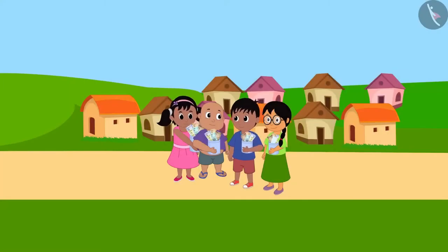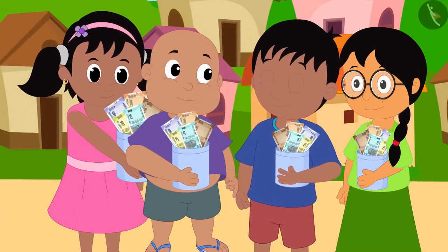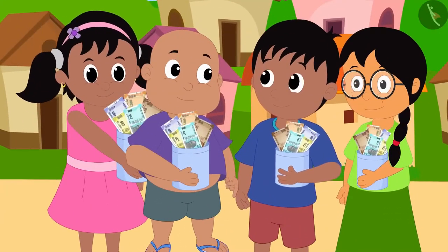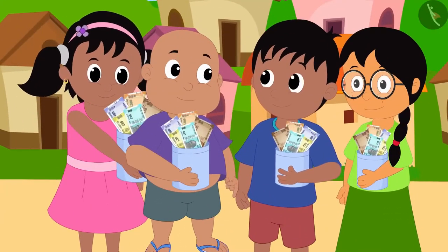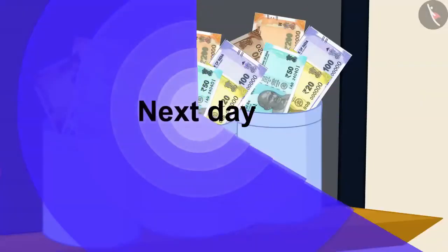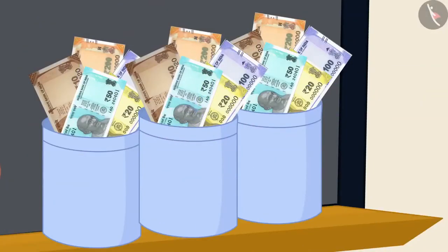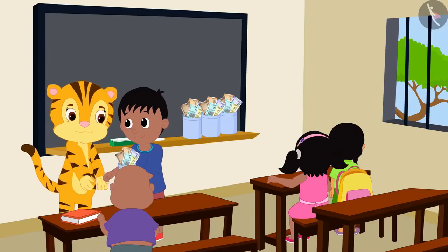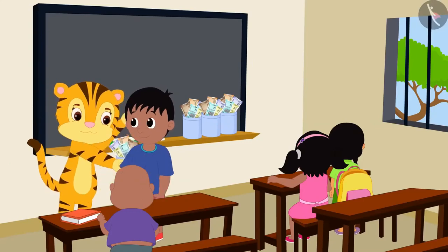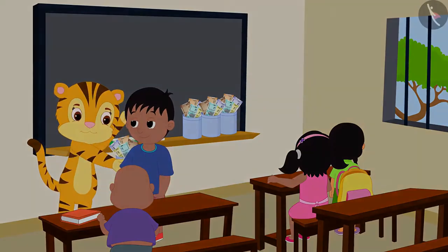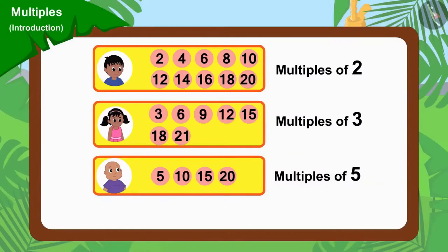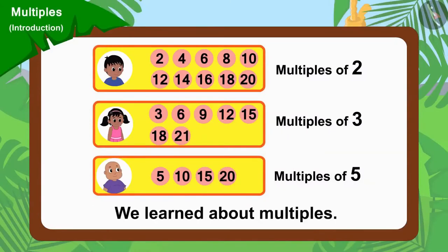Raju, Pinky, Meenu and Bablu amassed a lot of donations through their hard work. The next day, they gave all the money they had collected to their teacher and got a lot of appreciation from her. Children, in this video, we learned about multiples. In the next video, we will learn more about it through some interesting examples.